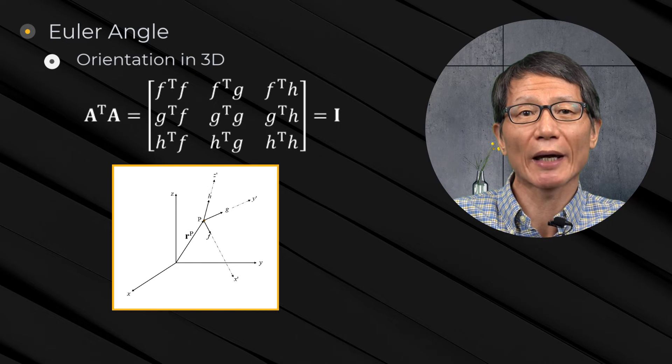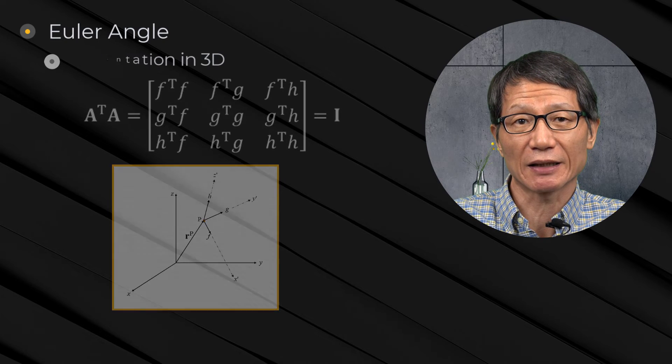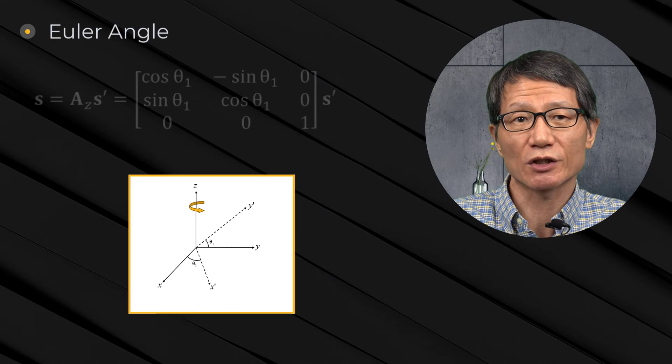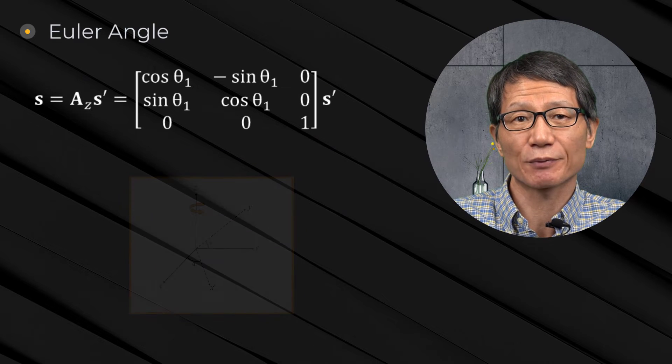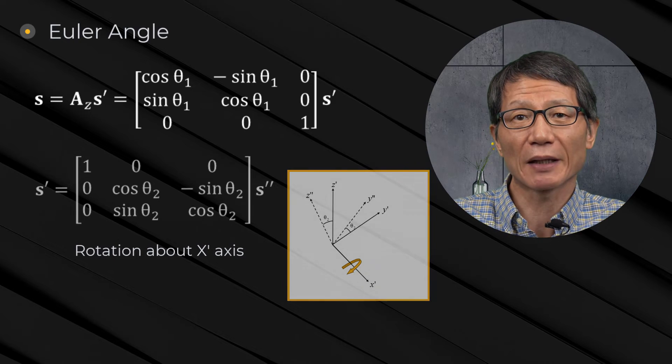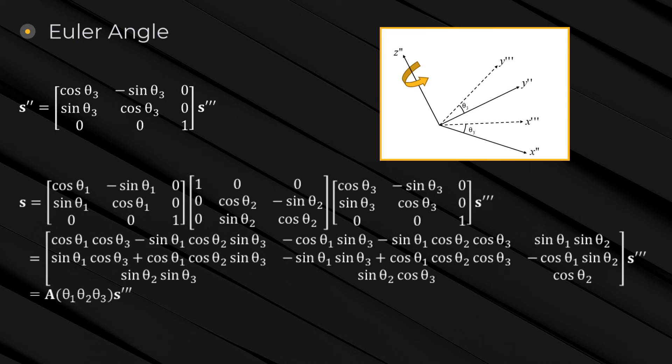Euler angle is one way to express the orientation matrix. It is three sequential rotation angles with respect to the z, x', z' axes. Therefore, the orientation matrix can be obtained by three sequential matrix multiplications.